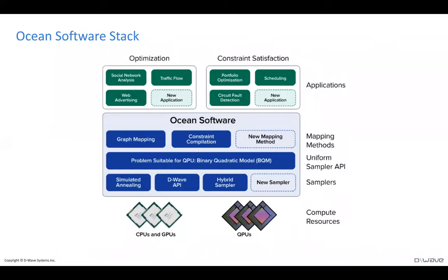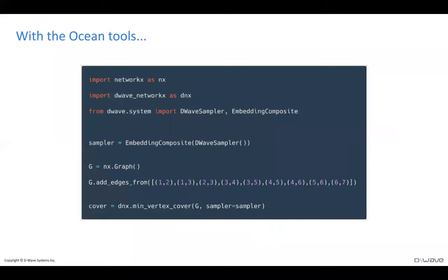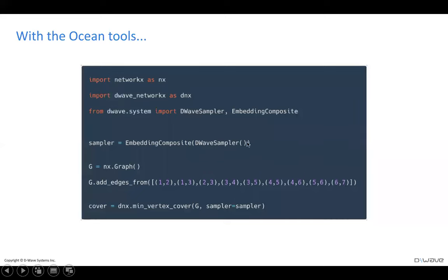Taking this picture and walking back to our Ocean code: in the middle we have our D-Wave sampler — our resource, access to the QPU. When you instantiate this D-Wave sampler object, it makes a real-time connection to a quantum processor using your token, which you get by signing up for Leap. You get a free minute and can access the processor within a couple minutes of signing up. The embedding composite layer brings the QPU sampler up to a more abstract problem representation.